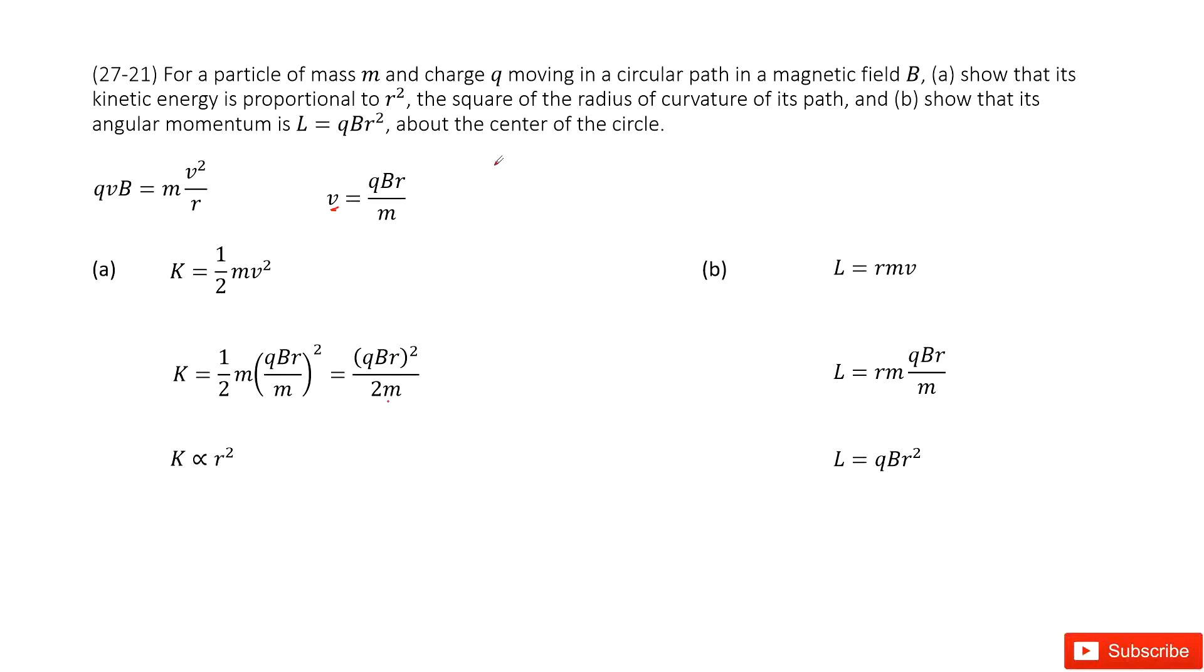The second one, we need to show the angular momentum equals this function. In this case we can consider angular momentum is rp, r times mv. And then you input the v inside and then simplify it. You get the answer there.